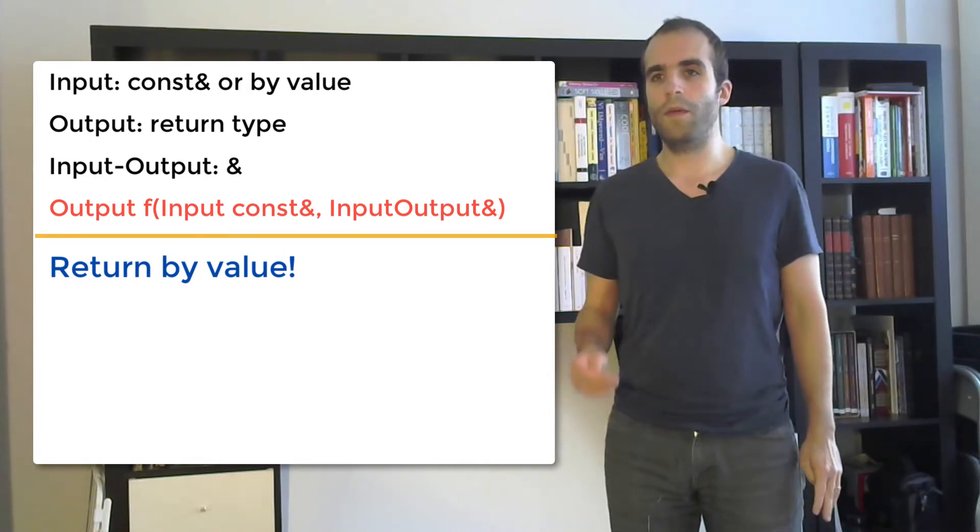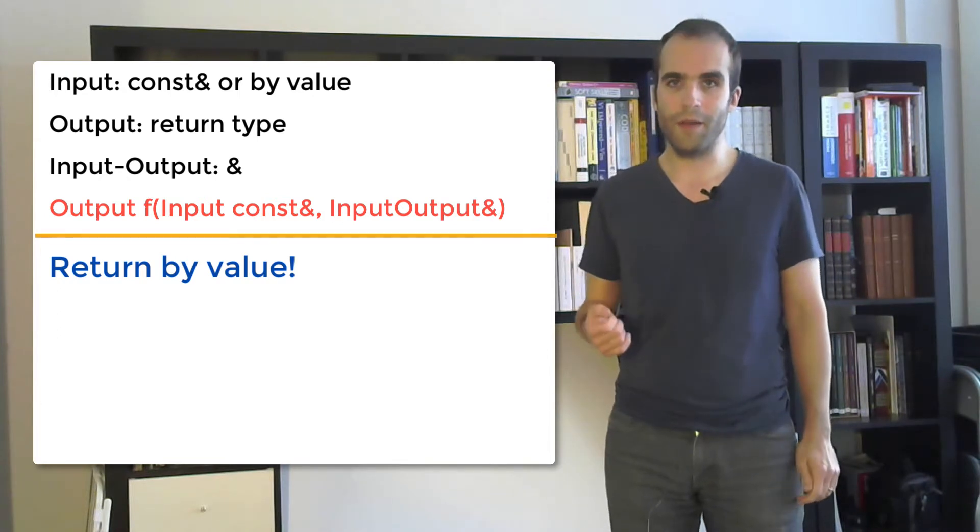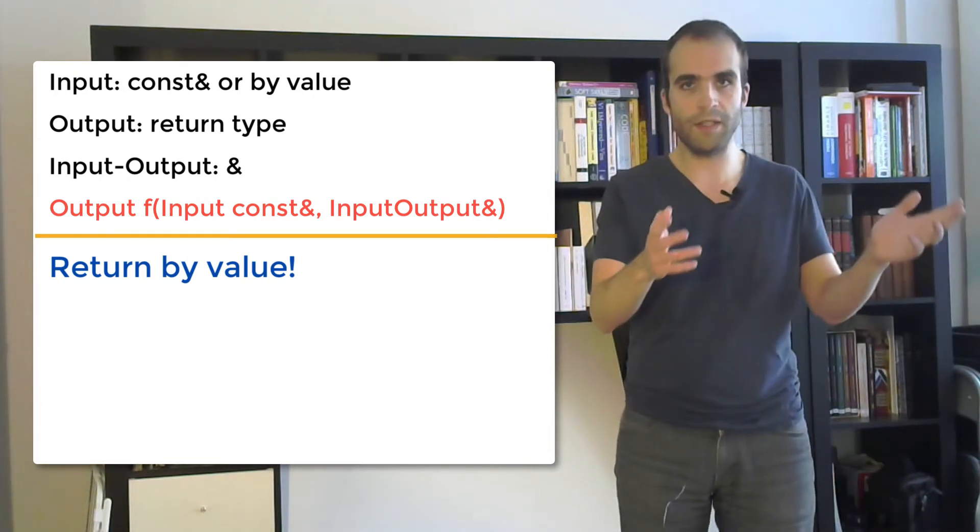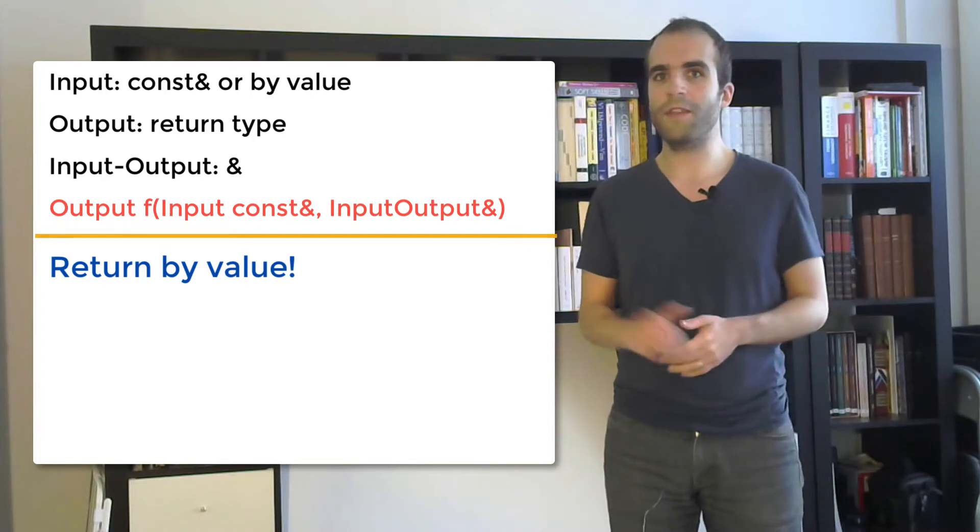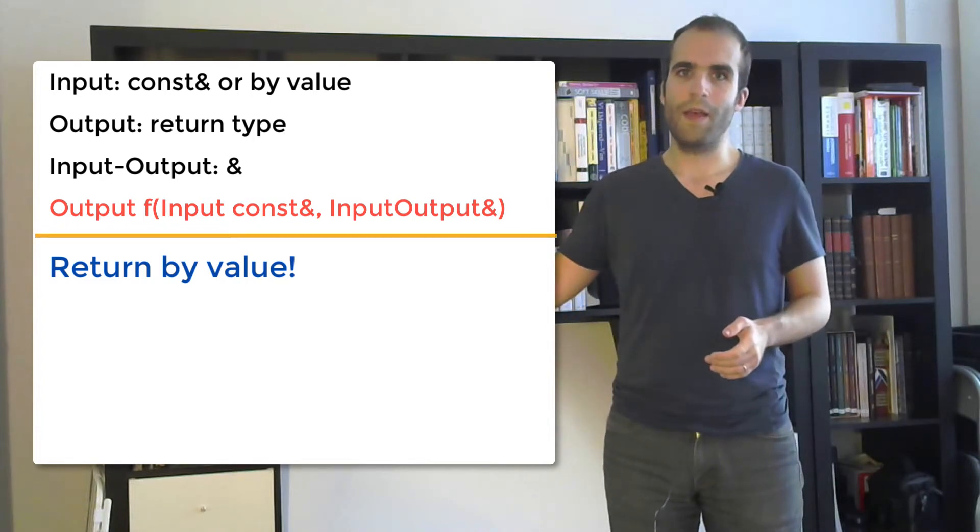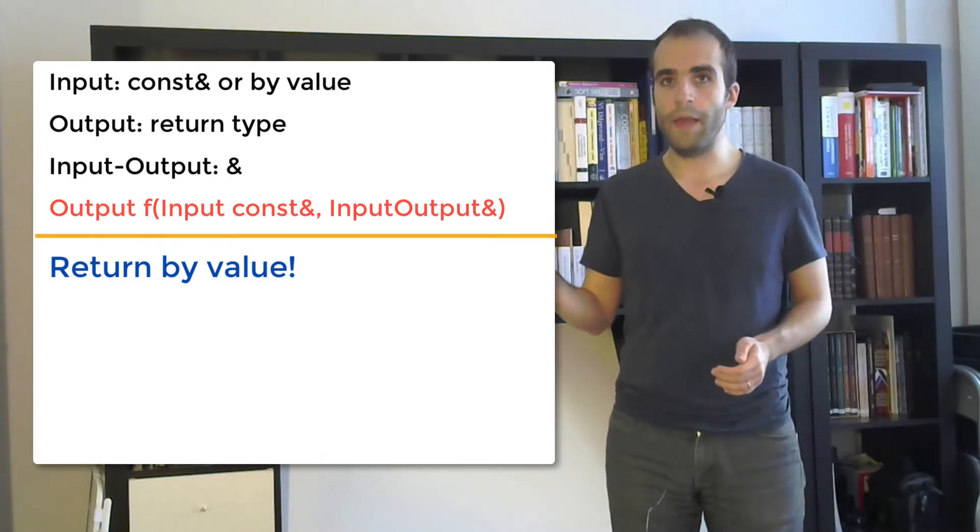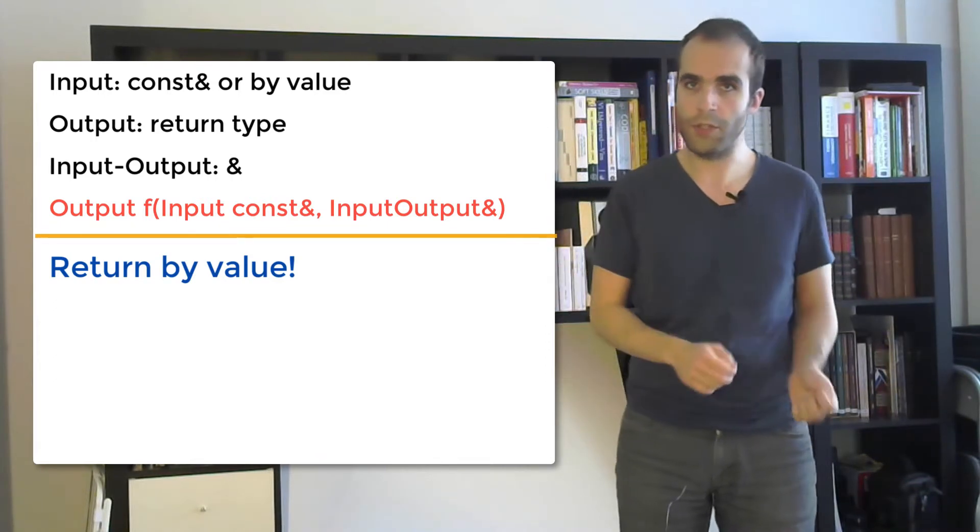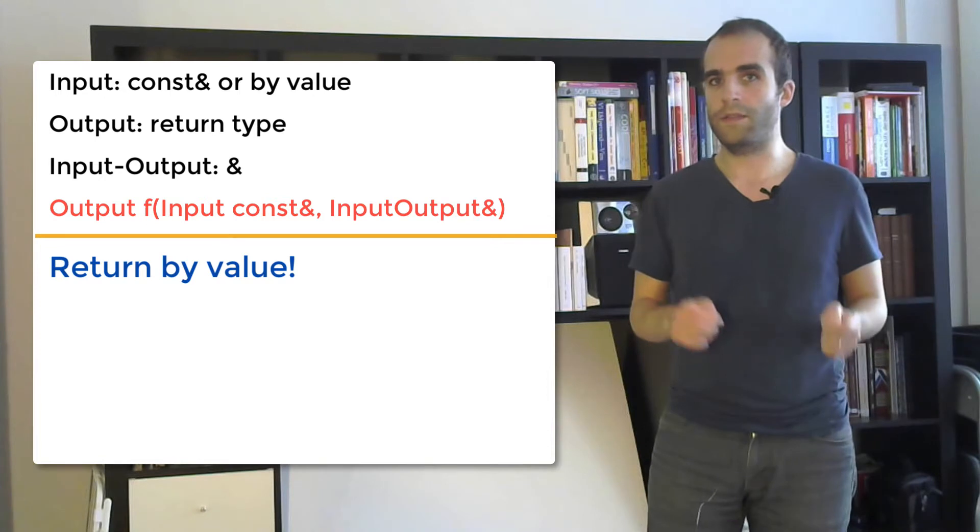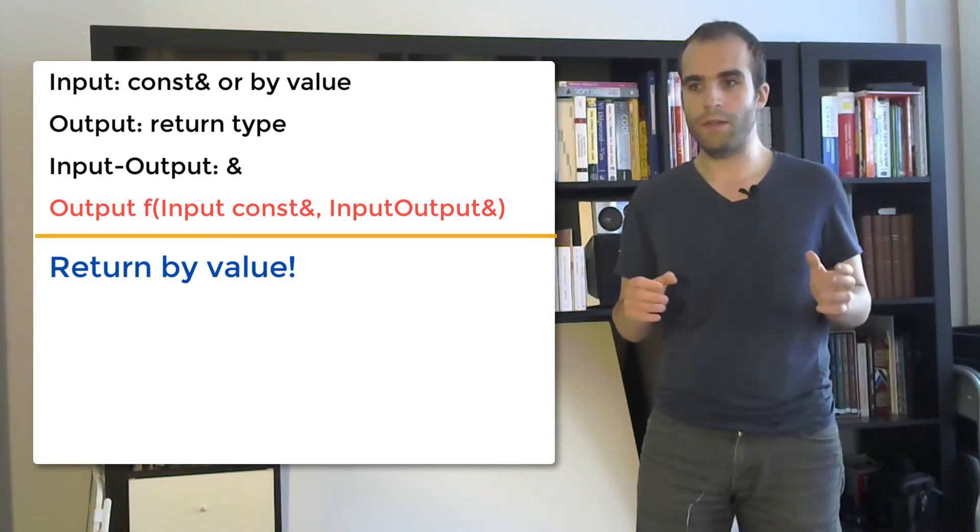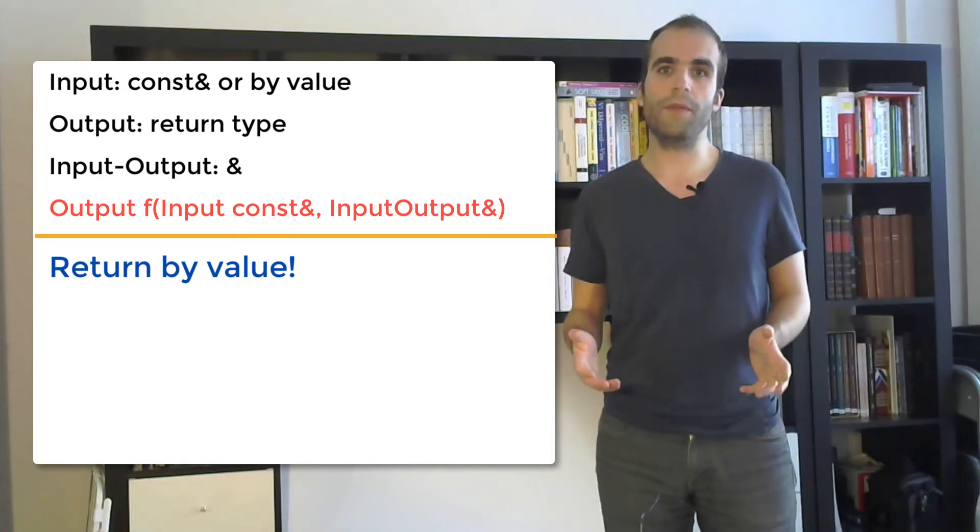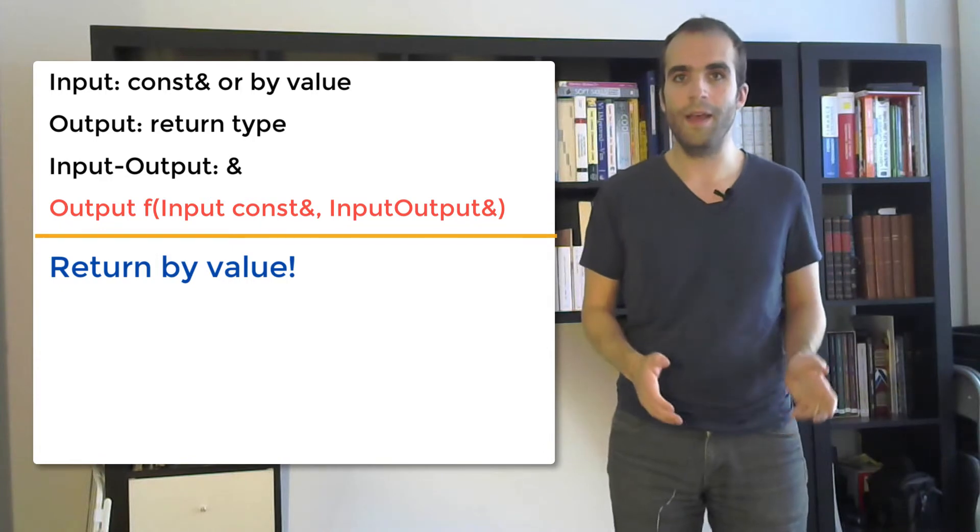So why don't we always pass the output through the return type? I think there are three reasons that prevent us from doing that and each of them has a solution. A solution so that we can pass the output through the return type and have a clear and natural code.